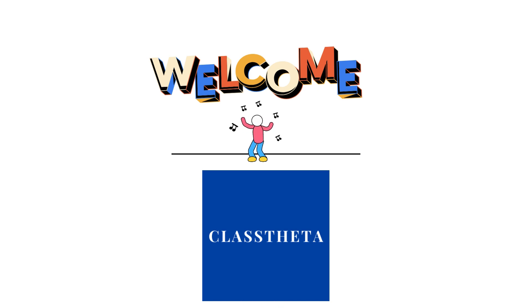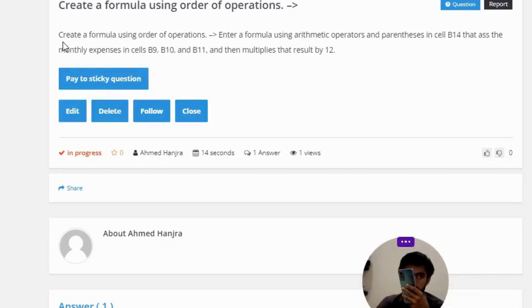Our today's question is: Create a formula using order of operations. Enter a formula using arithmetic operators and parentheses in cell B14 that adds the monthly expenses in cells B9, B10, and B11, and then multiplies that result by 12.